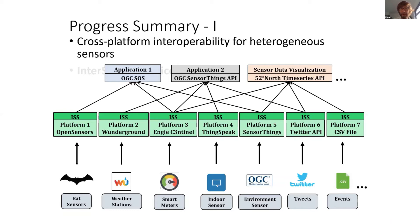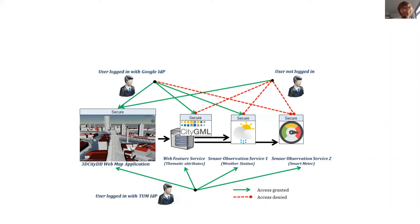They installed bat sensors as a proxy for air quality to monitor bat activity around the park, and all those kinds of datasets can be integrated. Authentication is key, of course, because not everybody should have access to all levels of data. A user who is not logged in may only see maps and visualizations, while a user with a general account like a Google account may have access to additional data like weather data.